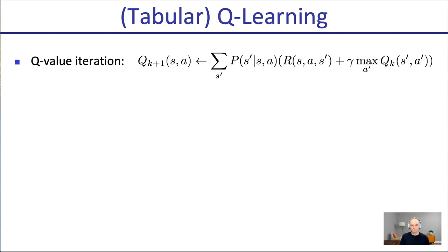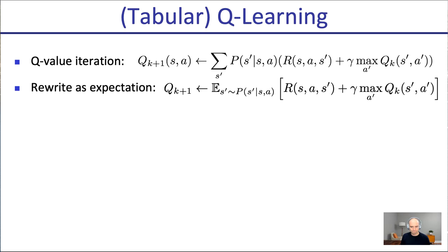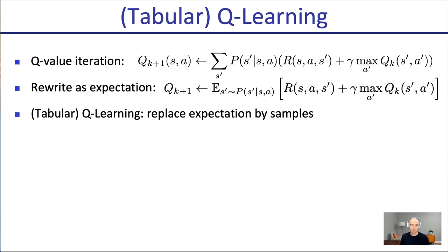In tabular Q-learning, Q-value iteration is great — we do multiple iterations of updates, visiting every state-action pair and computing an updated value. This assumes access to the transition model and the ability to iterate over all states. We're going to focus on not requiring access to the transition model. We'll rewrite this as an expectation: Q_{k+1} is the expected value of instantaneous reward plus future rewards summarized in the Q-value at the next state.